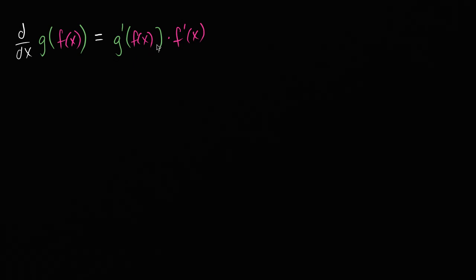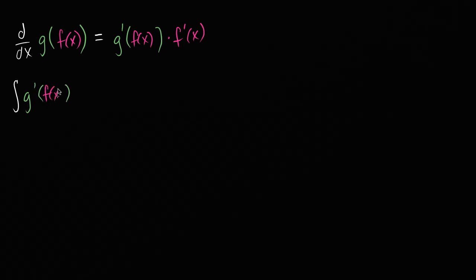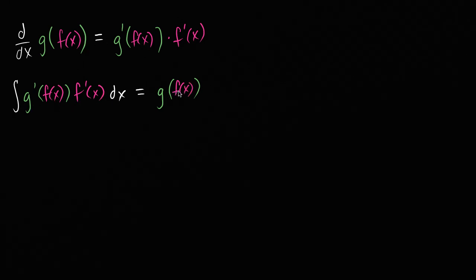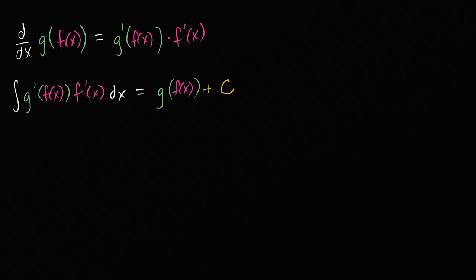So what I want to do here is: if this is true, can't we go the other way around? If I wanted to take the integral of g prime of f of x times f prime of x dx, well this should just be equal to g of f of x. And of course, whenever I'm taking an indefinite integral, I can't forget a constant, because if I take the derivative the constant disappears. So this idea you could call the reverse chain rule.